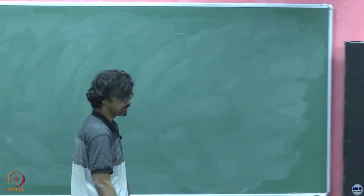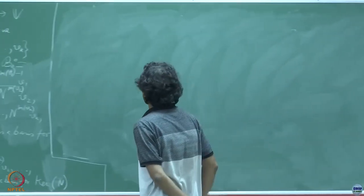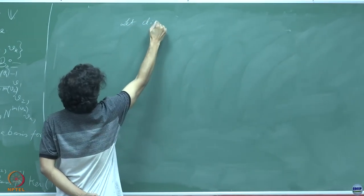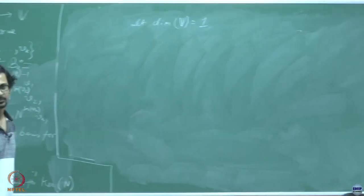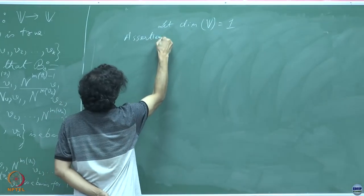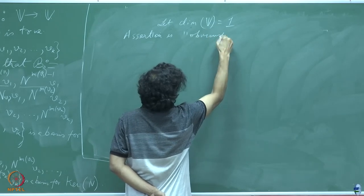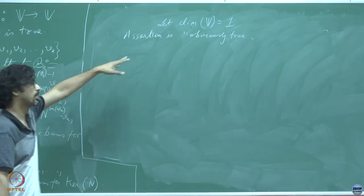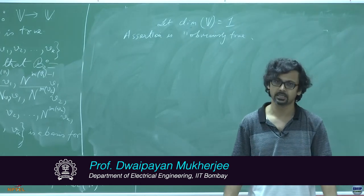We will be using one of the most familiar techniques, that is mathematical induction. Let dimension of V equal 1. The assertion is obviously true — any one-dimensional vector space will always satisfy this. So that is the base case.